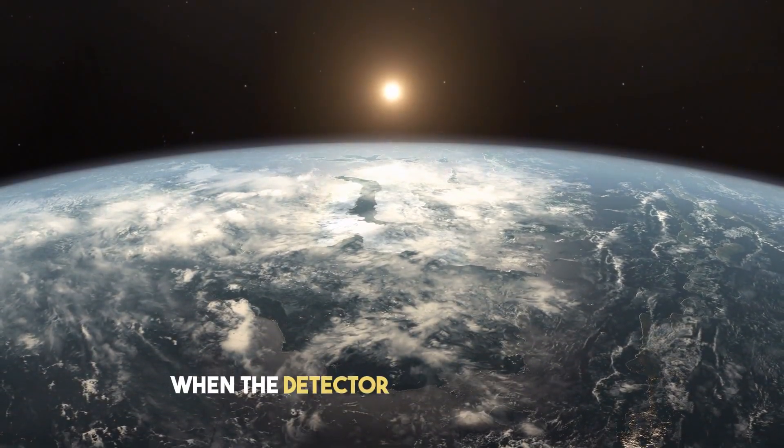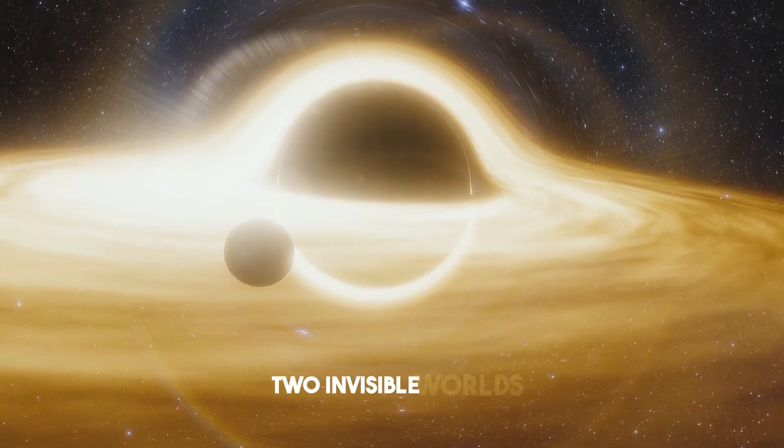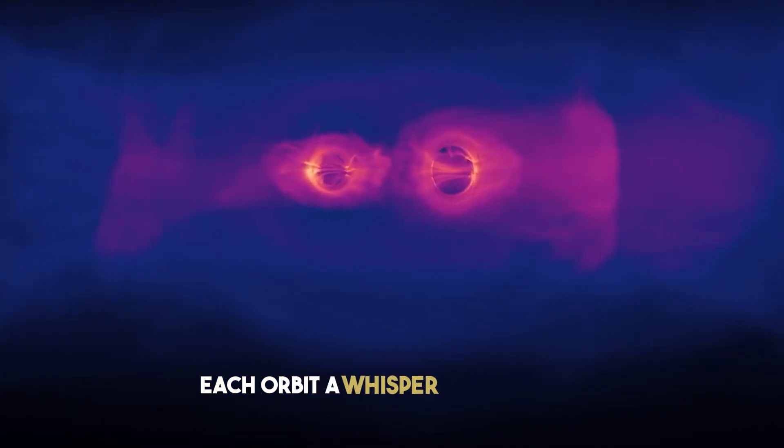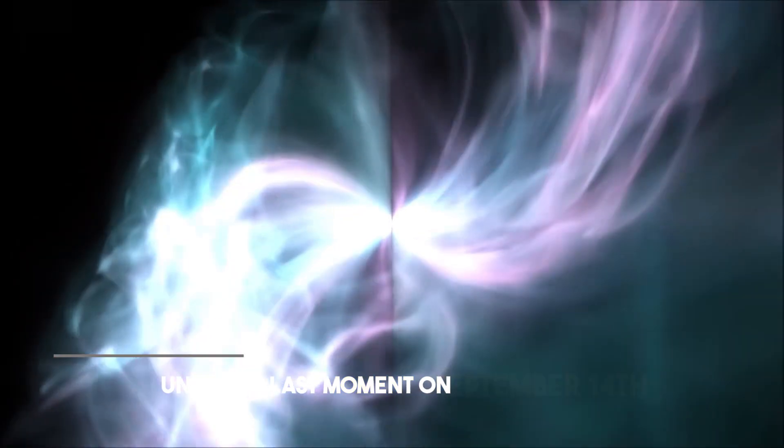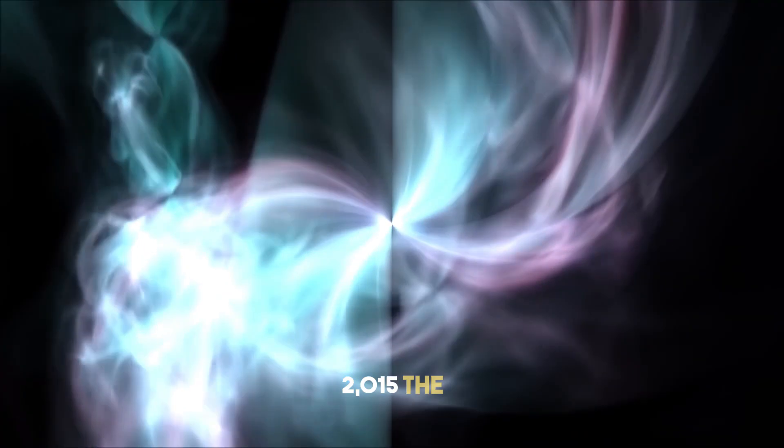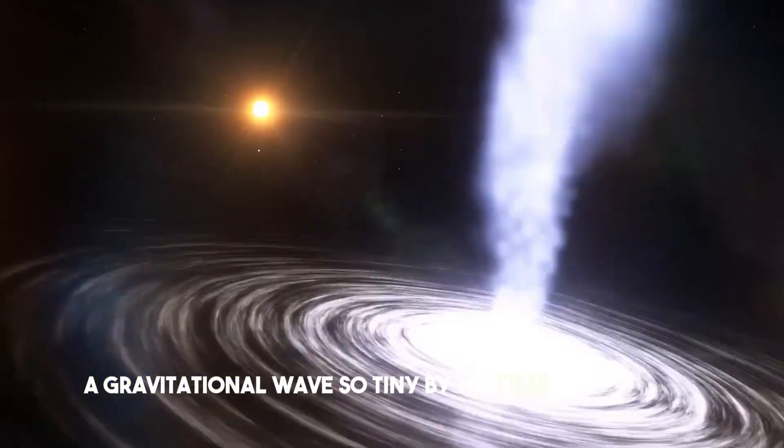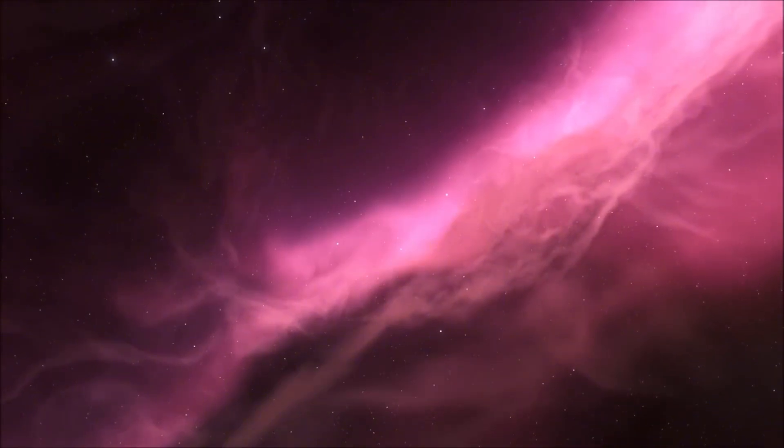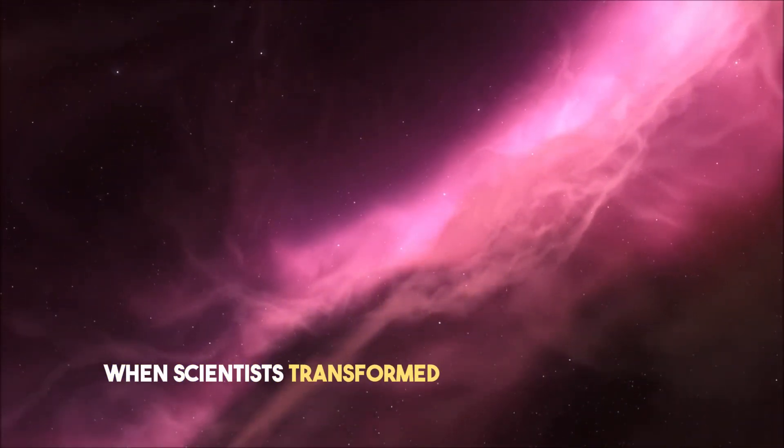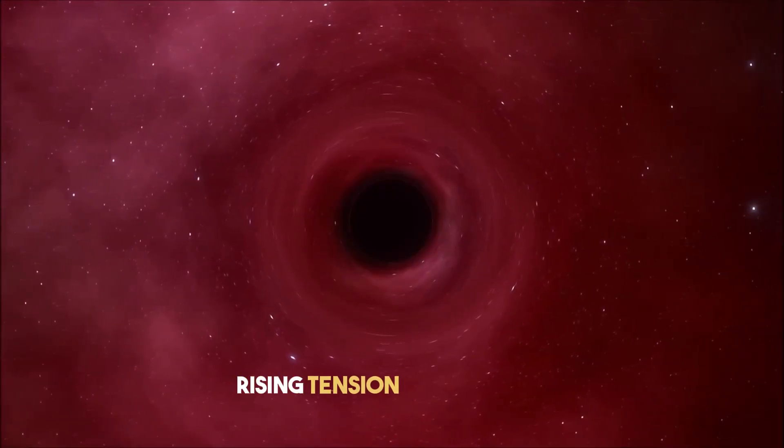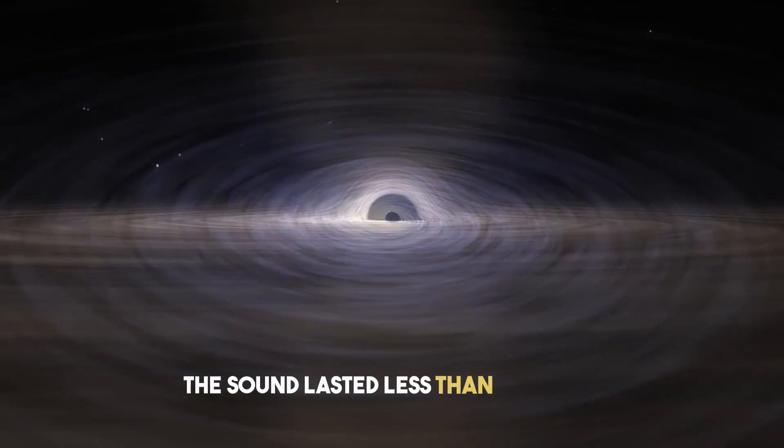They were listening to nothing when the detector on Earth flickered. Two invisible worlds, black holes, spiraling closer and closer, each orbit a whisper in spacetime until the last moment. On September 14, 2015, those whispers merged into a single crash. A gravitational wave so tiny by the time it reached us that it distorted space by less than the width of an atom. But when scientists transformed that distortion into sound, they found a chirp. Rising pitch, rising tension, then silence.